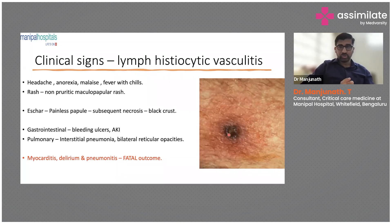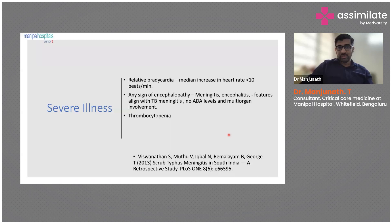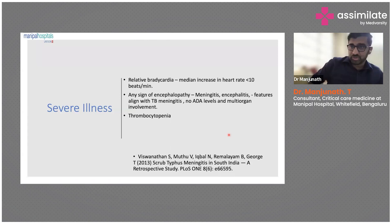Interstitial pneumonia is more classical of scrub typhus — bilateral reticular opacities on imaging — along with myocarditis, delirium, and pneumonitis. If there is involvement of the brain and pneumonitis or any hemorrhage, it has a fatal outcome, and whatever we do with IV doxycycline or azithromycin, chances of survival are less.